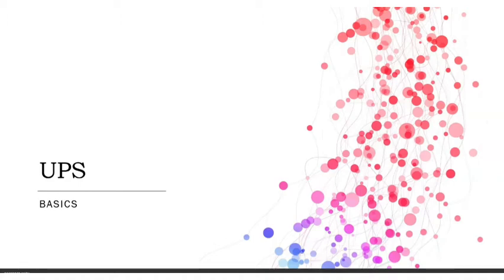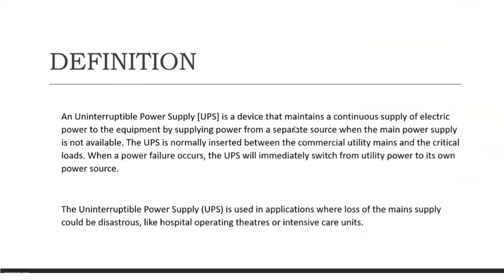Let us see about the basics of UPS. UPS is Uninterrupted Power Supply. We all have a UPS at our home along with our computer, and similarly we use UPS along with many other devices. The purpose of UPS is to provide uninterrupted power supply — whenever there is a problem with the main supply or it is turned off, you still need to provide power to the equipment. In that case we use UPS.